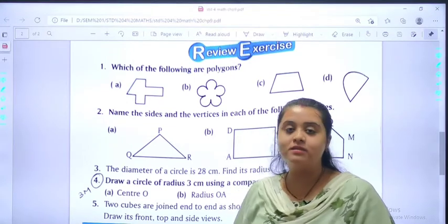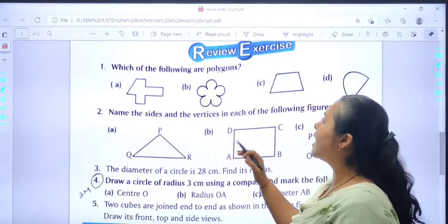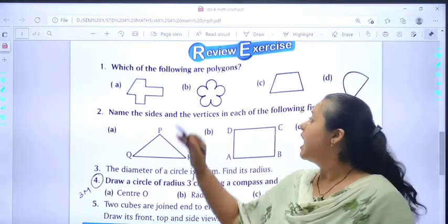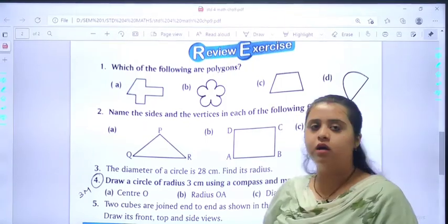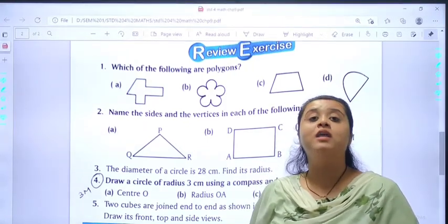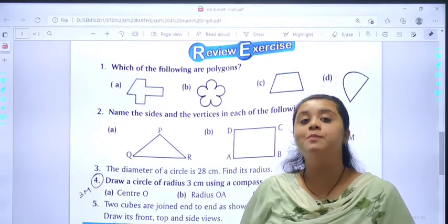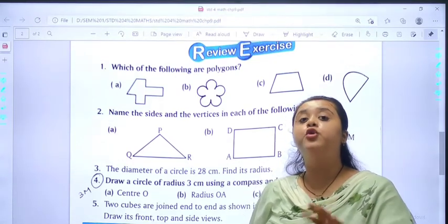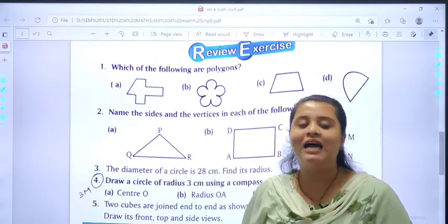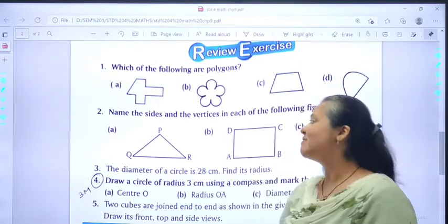Your question number 1 is, which of the following are polygons? Out of these 4 figures, we have to judge which are the polygons. We know the meaning of polygons. The polygons are made up of 2 or more line segments.